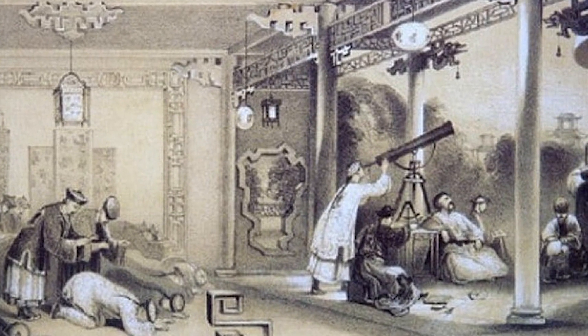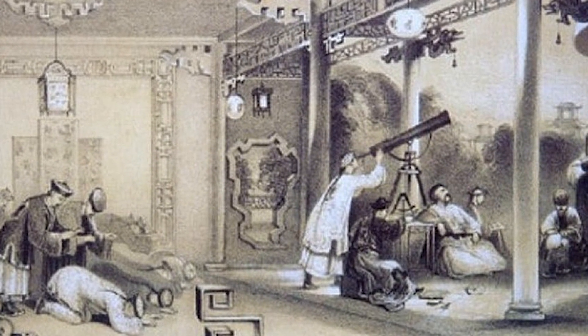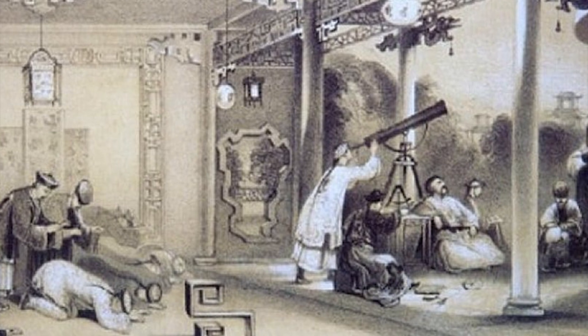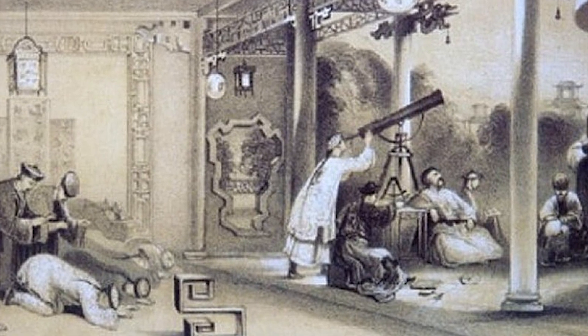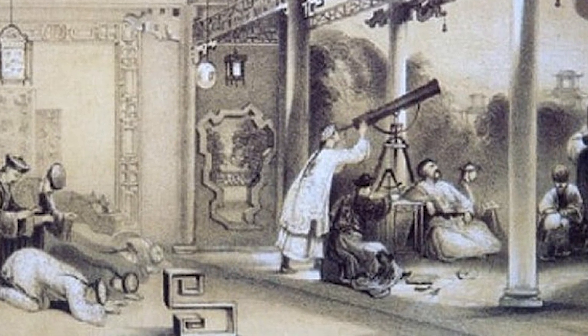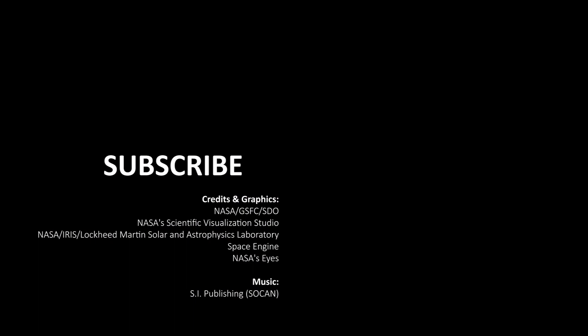Sunspots were observed as far back as 364 BC by astronomers in ancient China.